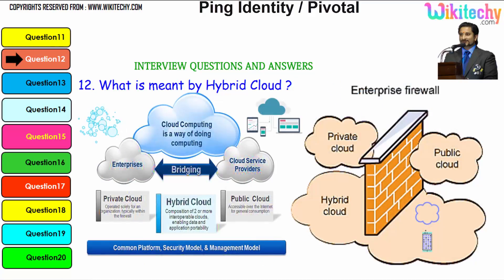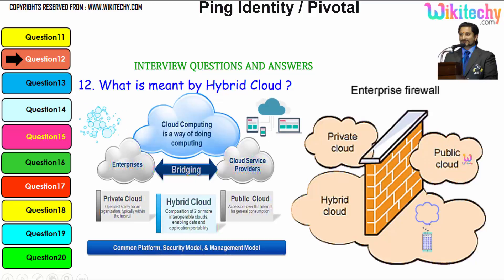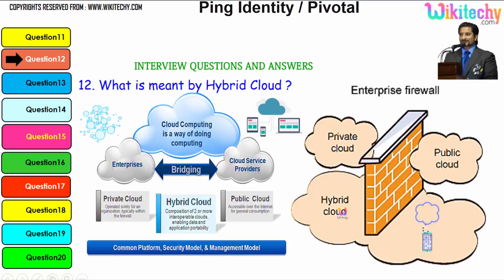Regarding firewalls: private cloud is really secure — you have a specific firewall. Over a public cloud, you don't have many specific firewalls to control intruders. Over a hybrid cloud, it is partial — you have secure data inside the firewall and the rest of the data outside the firewall.